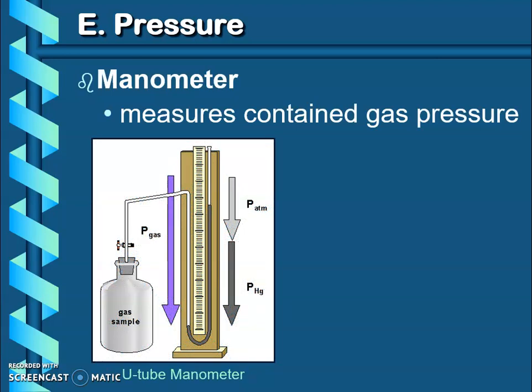There are also manometers. These measure contained gas pressure. So if you have a gas tank that you use to run your grill, or some people even have a propane tank attached to their house, if you have a gas stove, it will have on it a pressure gauge, and that pressure gauge is a type of manometer, and it measures how much pressure is in that tank to let you know how much gas is available in that tank.